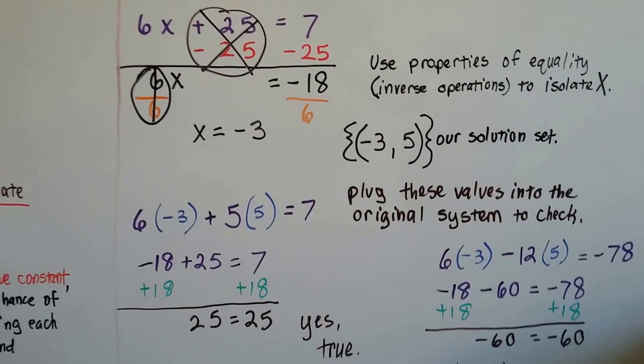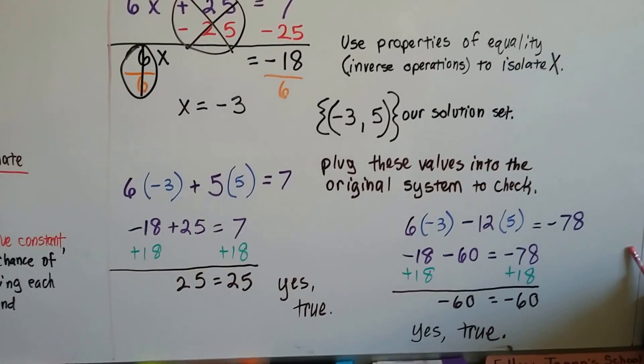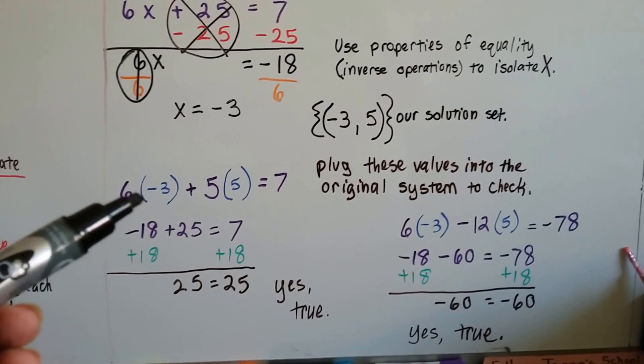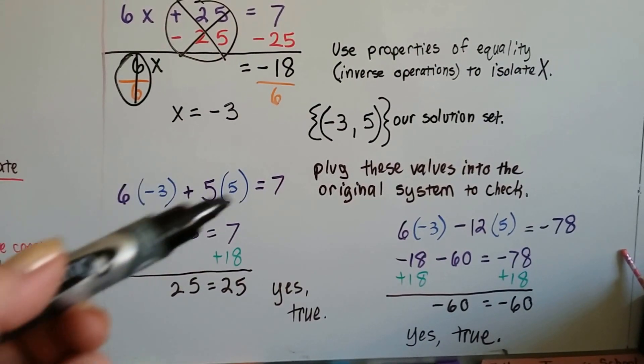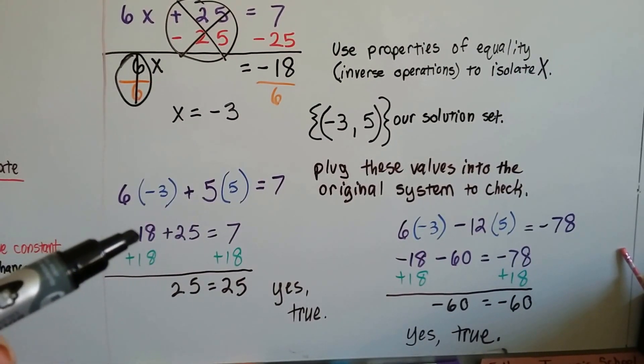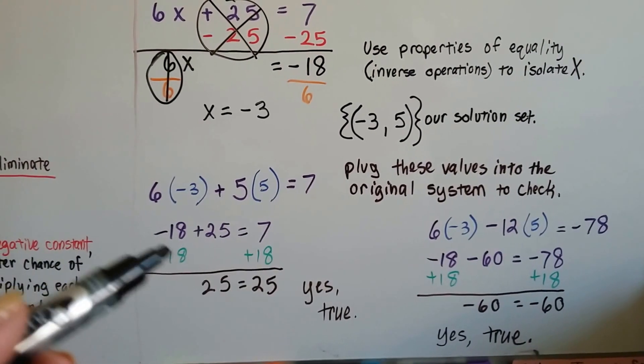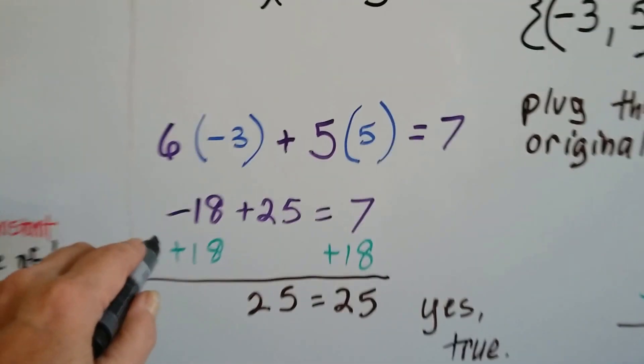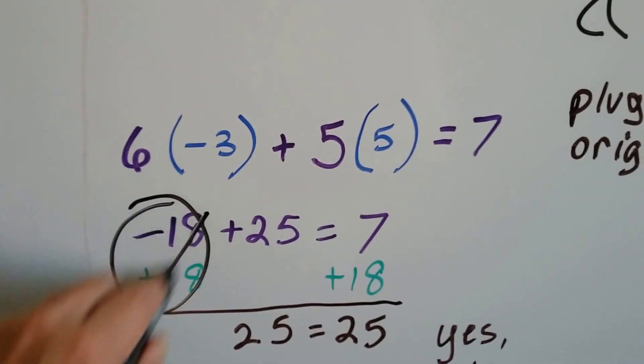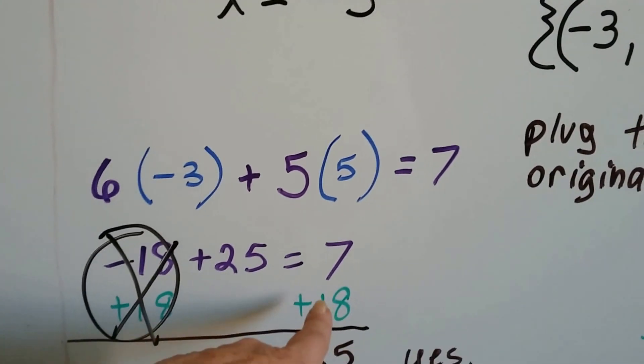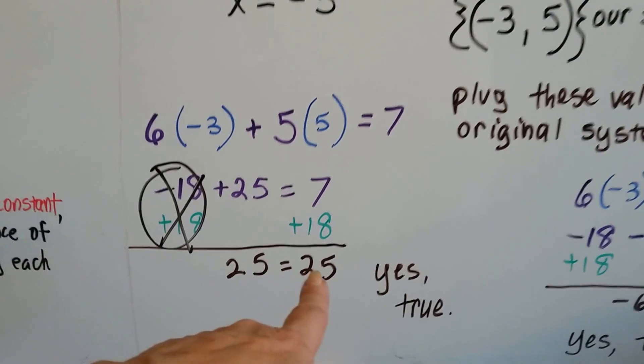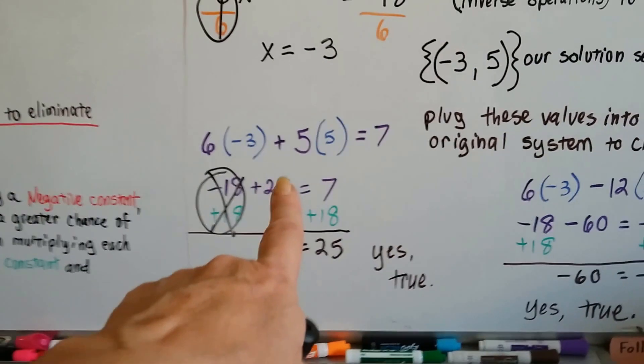So now all we have to do is plug these values into the original system to check them to make sure they're right. And we put a negative 3 and a 5 in for the x and the y. We get negative 18 plus 25 equals 7. We add 18 to each side to get rid of this and create a zero pair. And we add the 18 to this side. And we get 25 equals 25. So it's true for this equation.